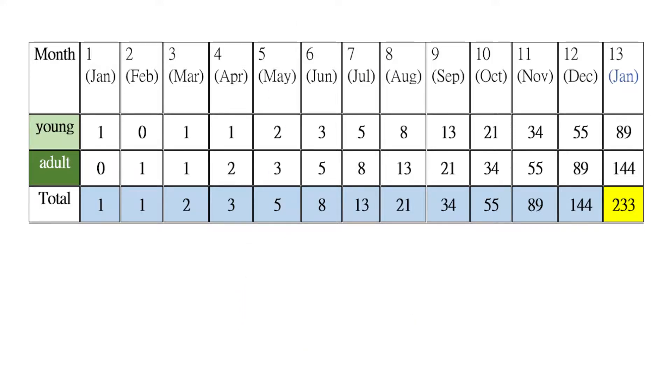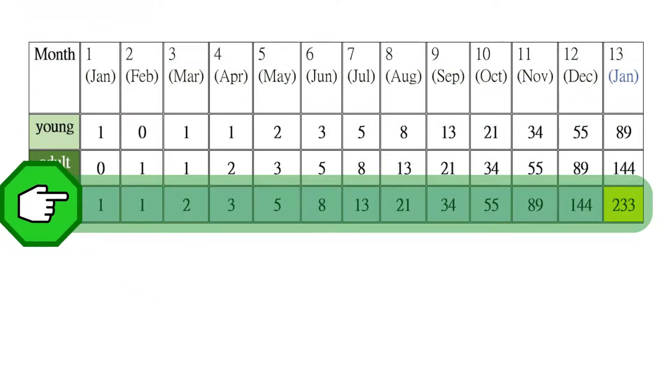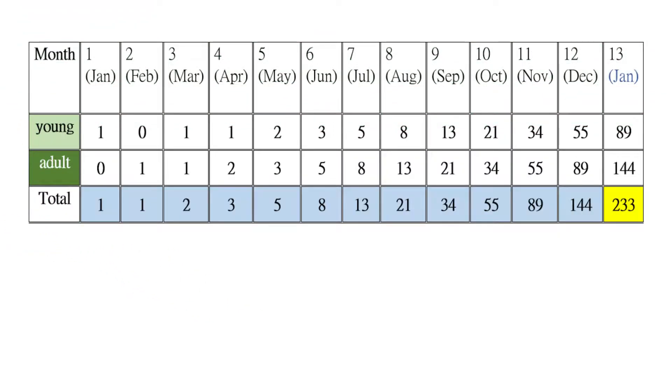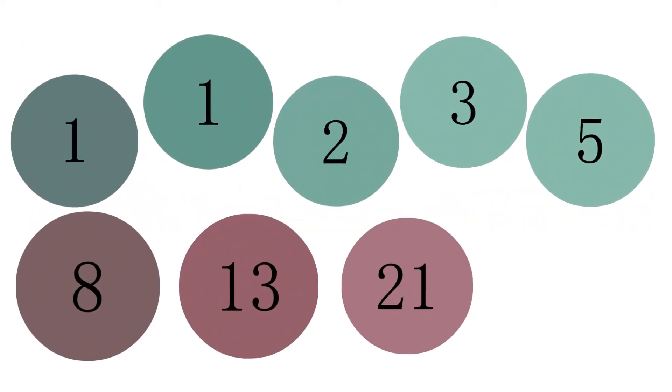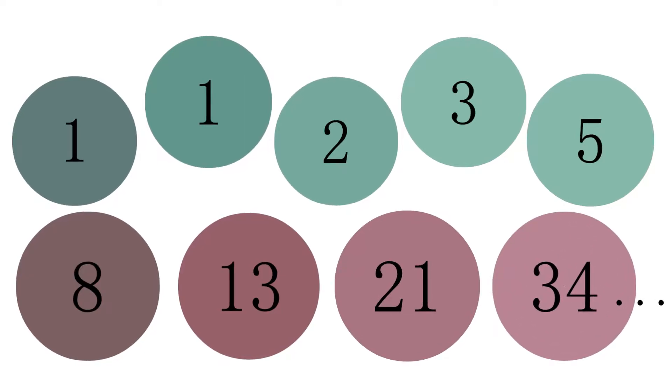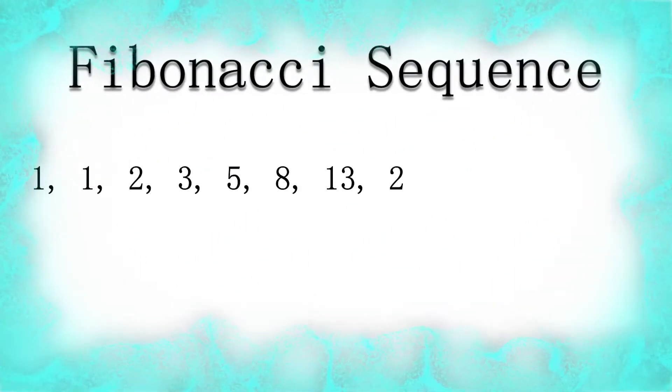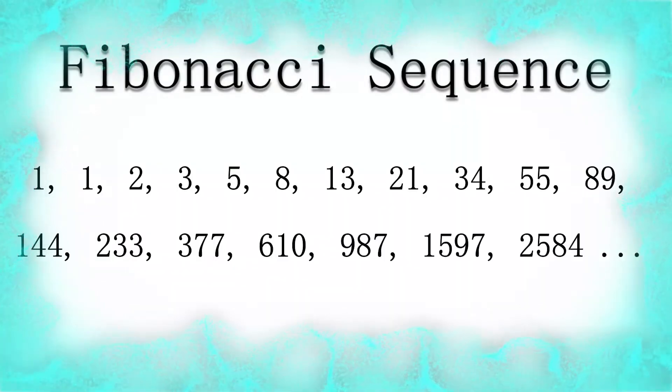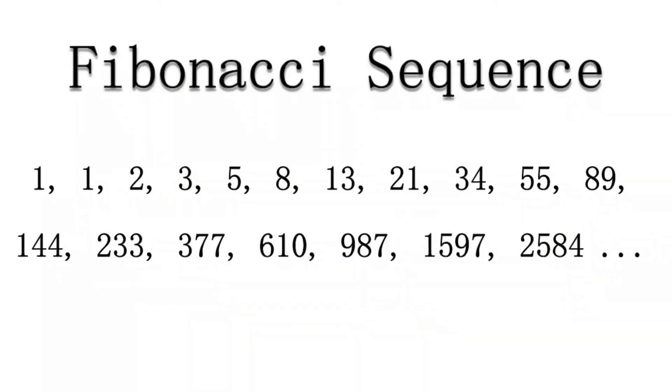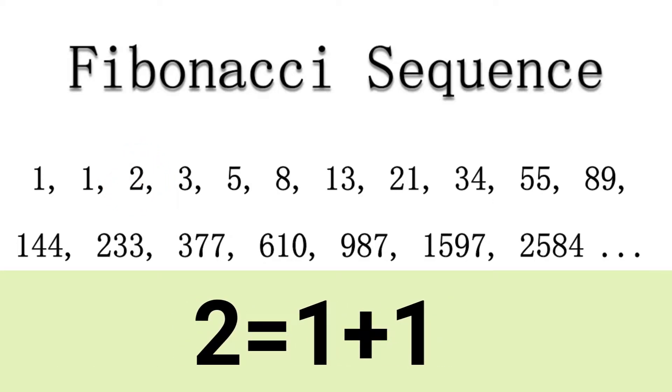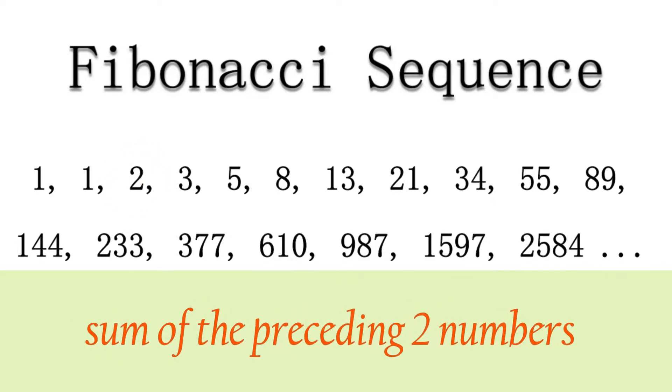So let's look at the total number of rabbit pairs with respect to months. This is a sequence down here in the last row. The sequence goes like this: 1, 1, 2, 3, 5, 8, 13, 21, 34... This is a number sequence called the Fibonacci sequence. The Fibonacci sequence has a unique pattern.